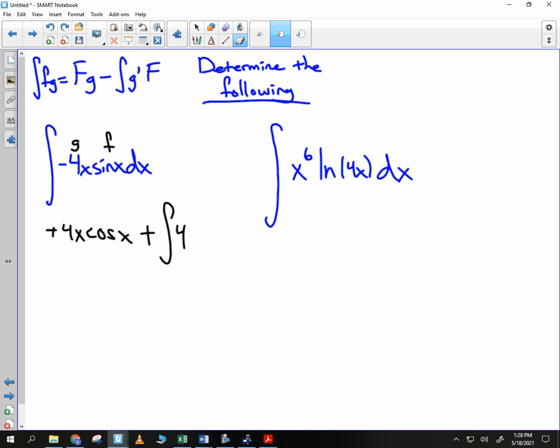Minus the integral of what is g prime. So you can do a plus 4. And then big F, which is negative cosine. Now we can determine this integral by just saying it's 4x cosine x minus the antiderivative of 4 cosine, which is just 4 sine, plus a constant.